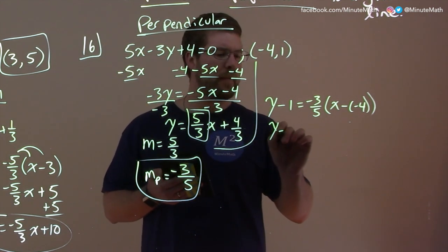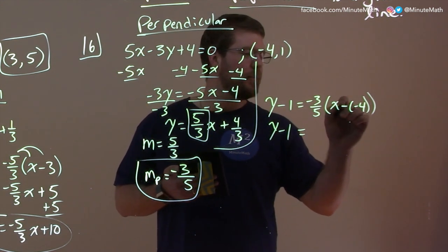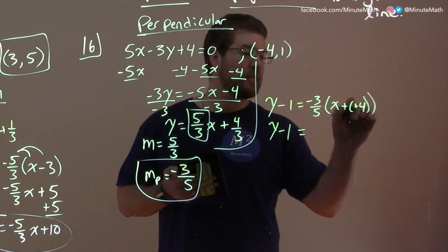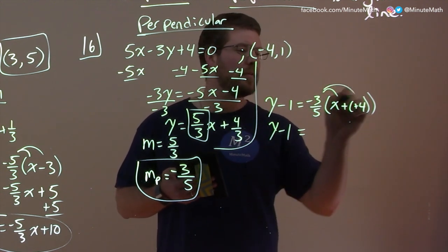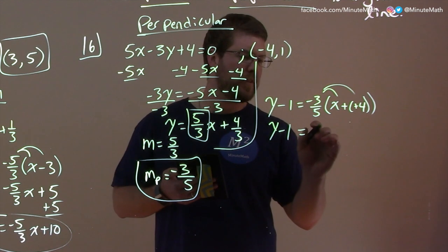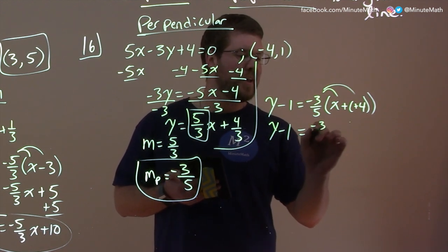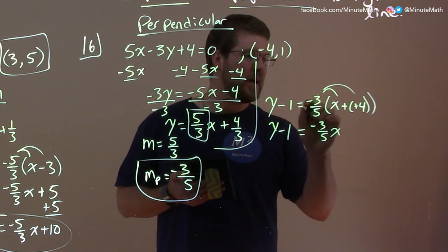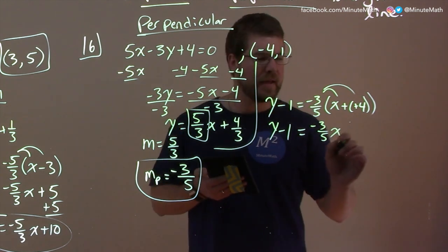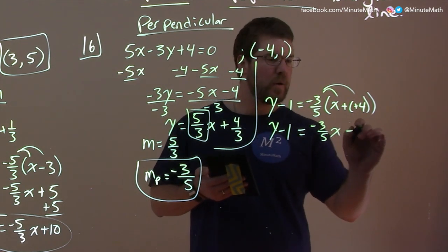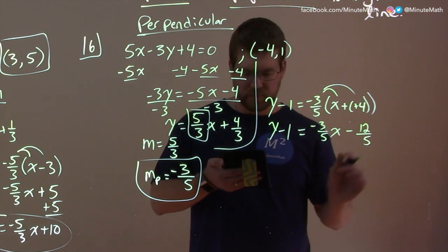Simplify where we can. We have y minus 1 equals, remember this minus a negative 4 is like plus a positive 4, and then we can distribute the minus 3x, or 3 fifths. So minus 3 fifths x here, and then negative 3 fifths times 4 is a minus 12 fifths.